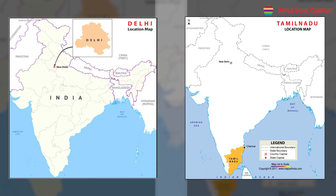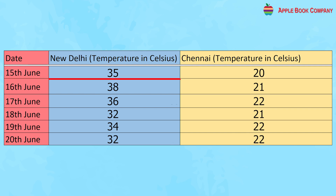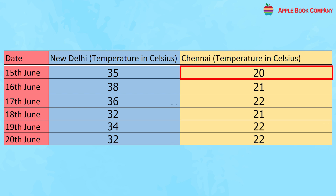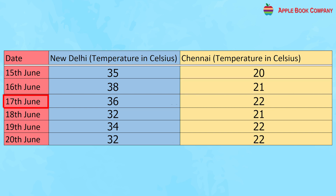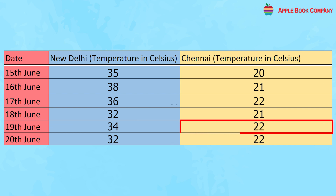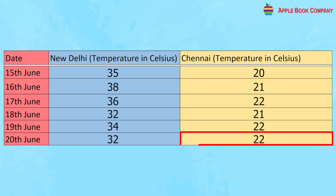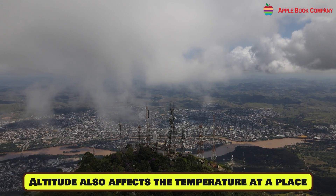To understand this, compare the temperatures of New Delhi and Chennai in June. On 15th June: New Delhi 35°C, Chennai 20°C. On 16th June: Delhi 38°C, Chennai 21°C. On 17th June: Delhi 36°C, Chennai 22°C. On 18th June: Delhi 32°C, Chennai 21°C. On 19th June: Delhi 34°C, Chennai 22°C. On 20th June: Delhi 32°C, Chennai 22°C. This shows that humidity controls a place's temperature.